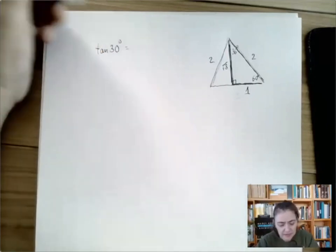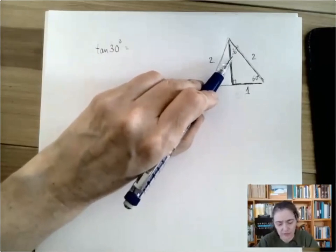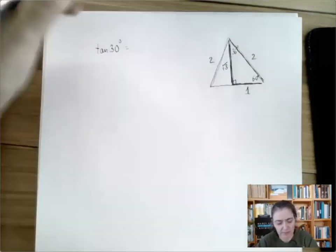And now we're ready to read anything of 30. So 30 is here. Tangent means opposite over adjacent. That's one divided by square root of three.